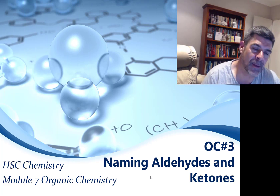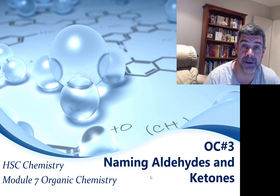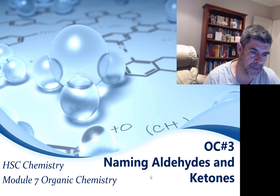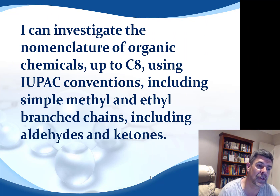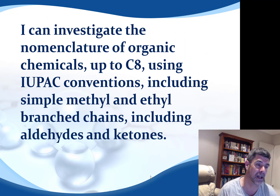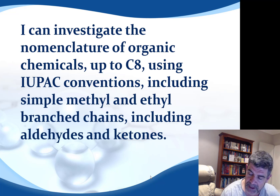Hello students, welcome to HSC Chemistry and Module 7 on Organic Chemistry. This is video number 3, the third in our series of nomenclature videos. In this particular one we're going to be focusing on the aldehydes and the ketones. Each time we look at nomenclature of our organic groups, we look at straight chains up to 8 carbons with side branches of 1 to 2 carbons, changing our functional groups to cover a range of different types of organic compounds.